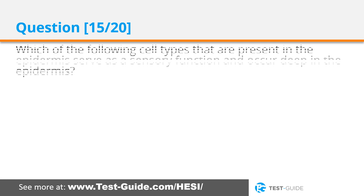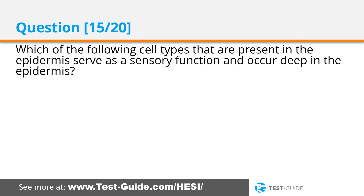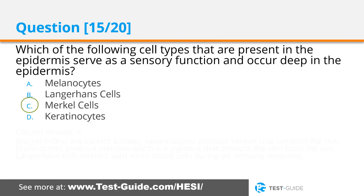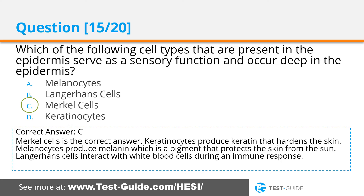Question fifteen: Which of the following cell types present in the epidermis serve a sensory function and occur deep in the epidermis? Options: melanocytes, Langerhans cells, Merkel cells, keratinocytes. Correct answer C. Merkel cells is the correct answer. Keratinocytes produce keratin that hardens the skin. Melanocytes produce melanin, a pigment that protects the skin from the sun. Langerhans cells interact with white blood cells during an immune response.